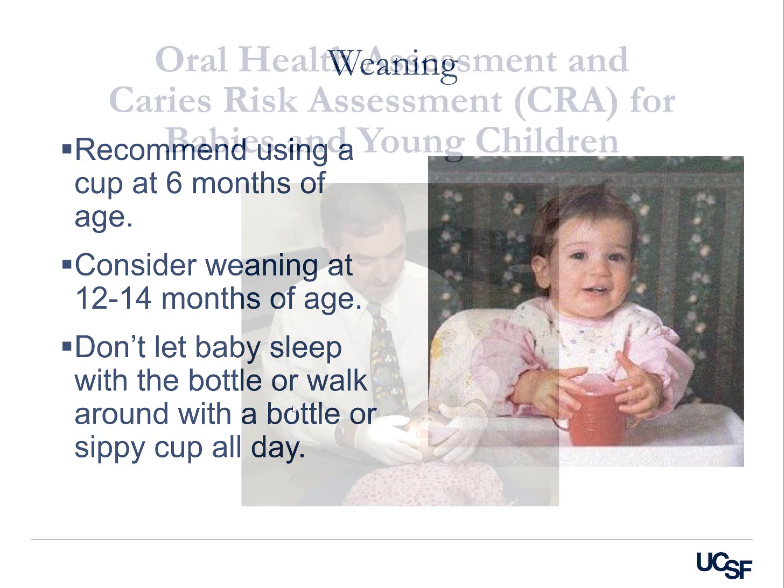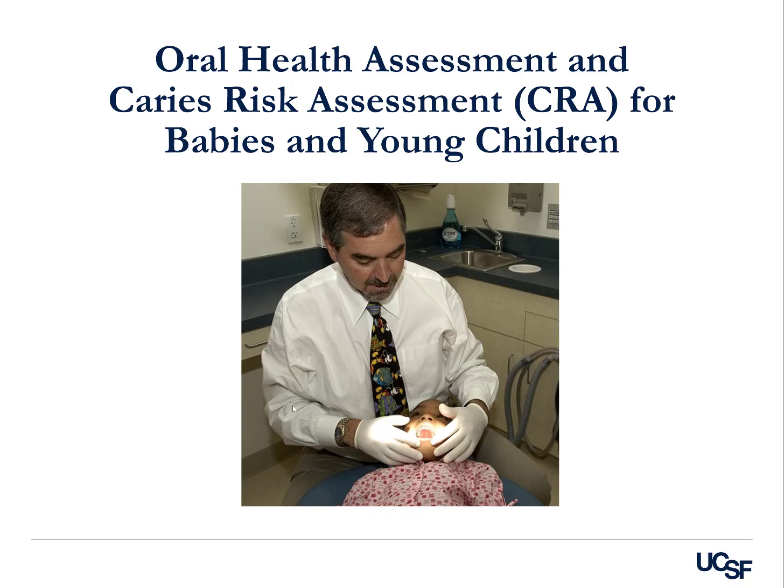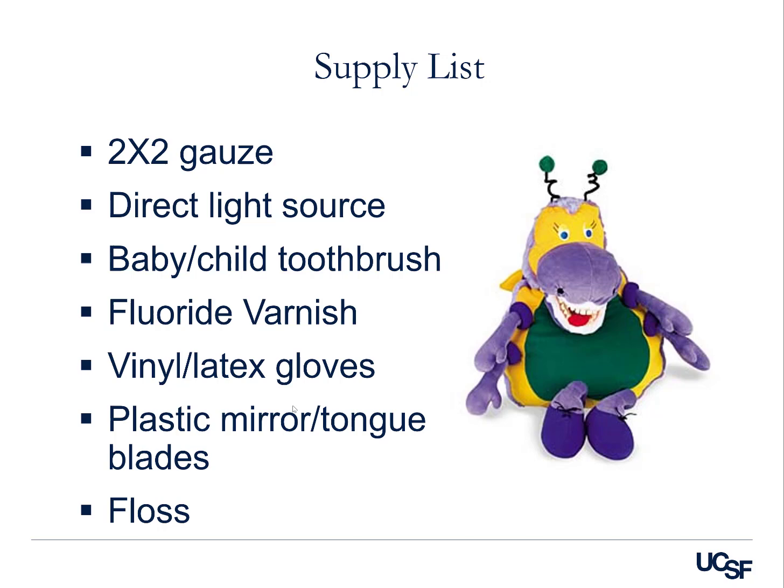Now let's talk about caries risk assessment for babies and young children. Before conducting caries risk assessment, it's important to establish our equipment on a tray: 2x2 gauze, a direct light source, toothbrush, fluoride varnish, latex gloves, a plastic mirror or tongue blade, and floss. The 2x2 gauze is needed because brushing will generate a lot of saliva and fluid — you use it like a towel to wipe off excess. A direct light source is needed for better examination inside the oral cavity.